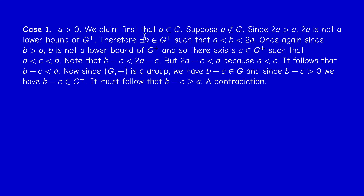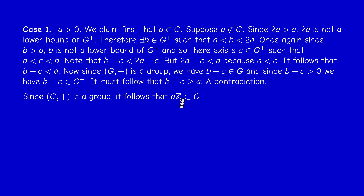So the claim is proved: the element a, which is the infimum, if positive, necessarily belongs to G. Now, if a is in G and G is a group, then any multiple of a is in G. So -a is in G, 2a is in G, -2a is in G. All positive and negative multiples of a are in G. So the group aZ is contained in G.